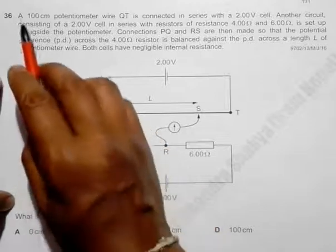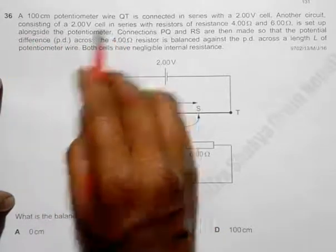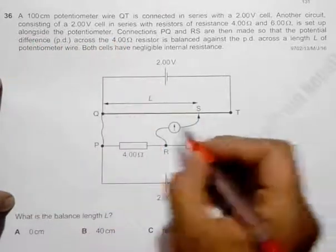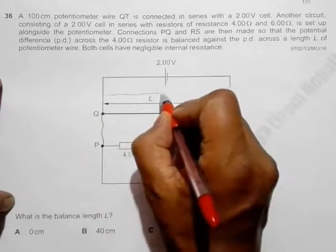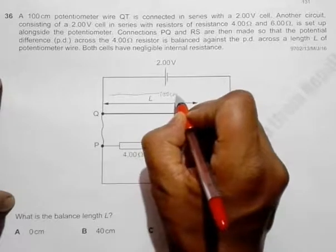It says 100 cm potentiometer wire QT, so it means that the length from here to here is total 100 centimeters.